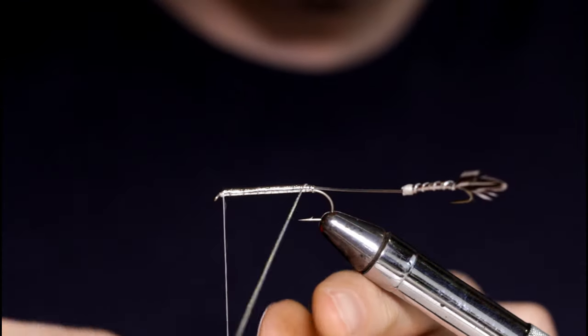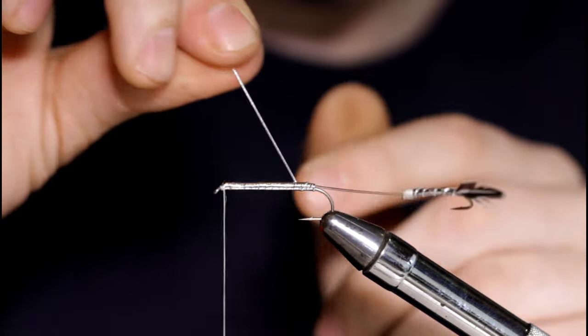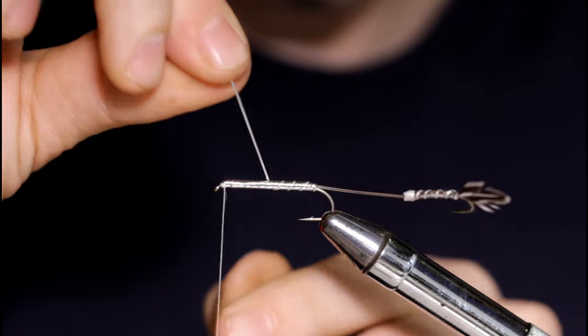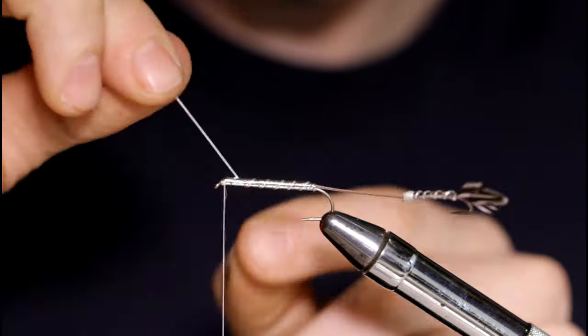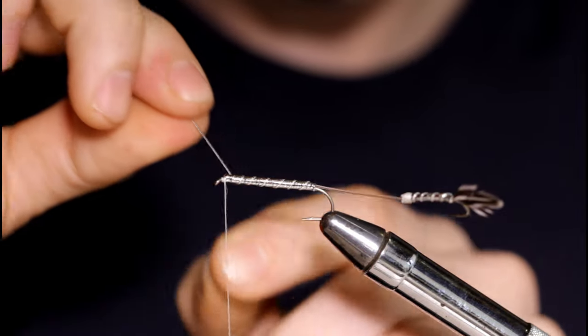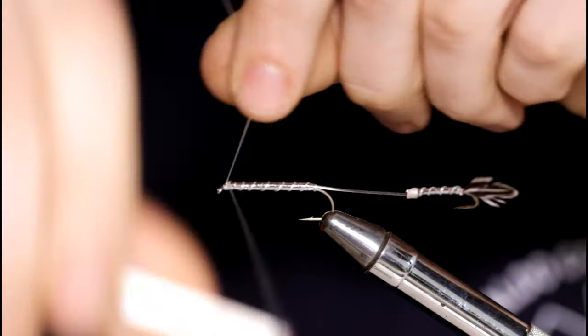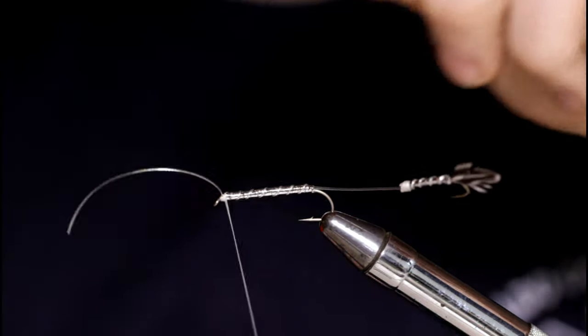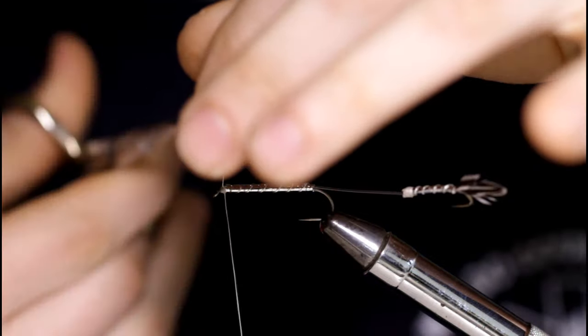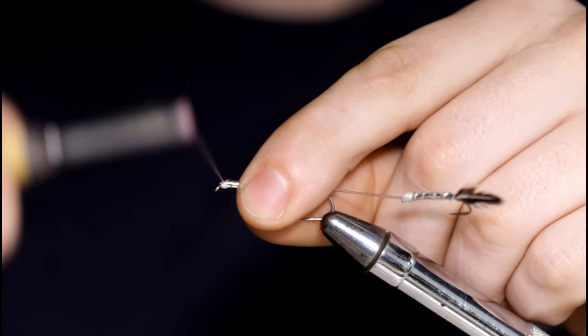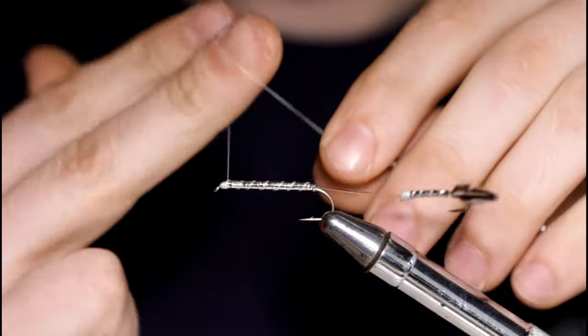I'm going to come in with my rib here. Start wrapping that open spiral wraps forward. And bind it down. I'm going to snip that off. Put a few turns of thread over this to secure it. And then I'll throw a couple half hitches in. I'm going to switch the thread over.